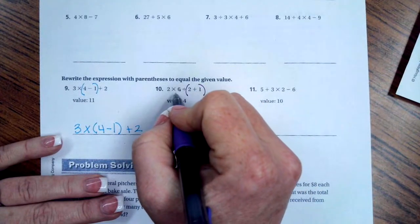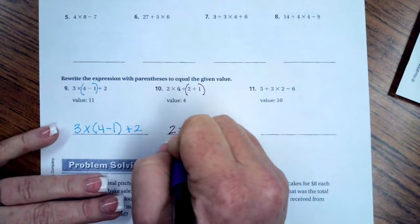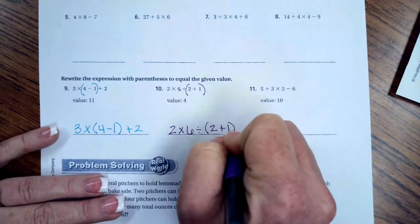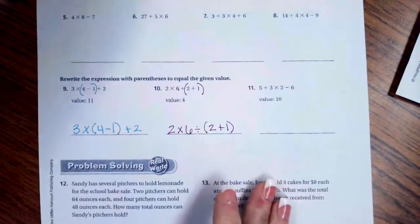We'd put our parentheses right there. 2 times 6 is 12. 12 divided by 3, that's 4. So 2 times 6, divided by 2 plus 1. I want you guys to try number 11, see how you do.